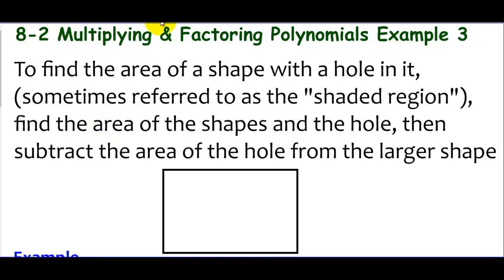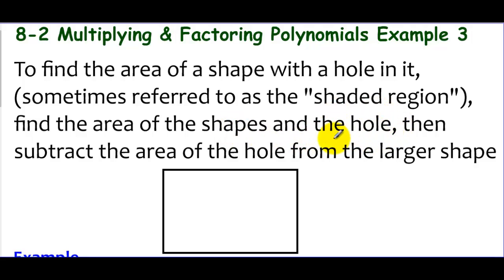Let's do a little application of multiplying and factoring polynomials. We need some background information before we get into the application problem. This deals with specific types of area problems called area of a shaded region. If you want to find the area of any shape that has a hole in it — which is the shaded region — you find the area of the shape, separately find the area of the hole, and then subtract the area of the hole from the shape.